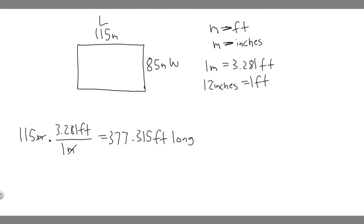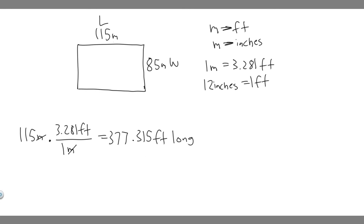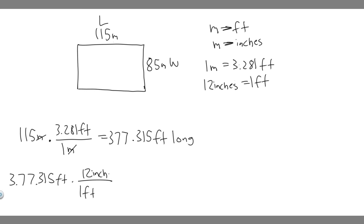Now that we have the feet, we want to put it in inches. We're going to convert from feet into inches since we know that conversion. So we write our value out — 377.315 — and this is in feet. We do the same thing but with feet and inches: feet is on top, so we put one foot equal to 12 inches. Now the feet will cancel.